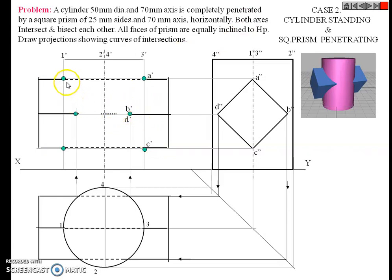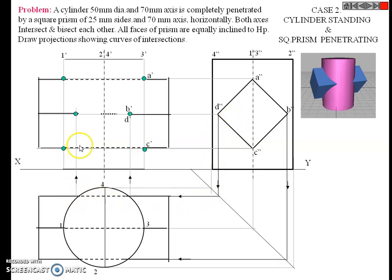Similarly, for the left side also, we repeat the same process. Points a and c are on h1, so this is point a and this is point c. This is point d, and this is point b. Points b and d overlap, so this gives points a, d, and b. To this side also: a dash, b dash, d dash, c dash.